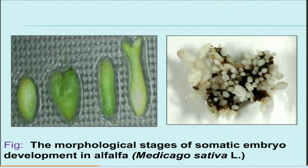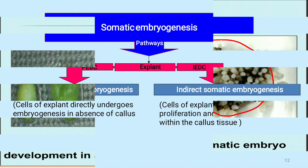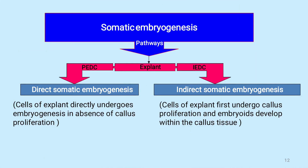These are the morphological stages of somatic embryogenesis in alfalfa. First is the callus stage, then heart shape, then torpedo shape, and then the leaf or developmental stage. This shows the development of small somatic embryo cells.